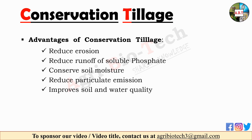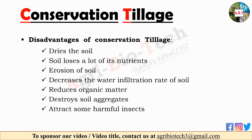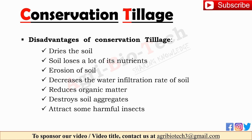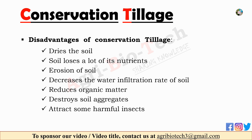Disadvantages of conservation tillage include: it dries the soil before seeding; the soil loses a lot of its nutrients like carbon and nitrogen and its ability to store water; it is responsible for more soil erosion; it decreases the water infiltration rate of soil; it reduces organic matter in the soil including microbes, carbon compounds, and earthworms; it destroys soil aggregates; and it can attract some harmful insects to the field.